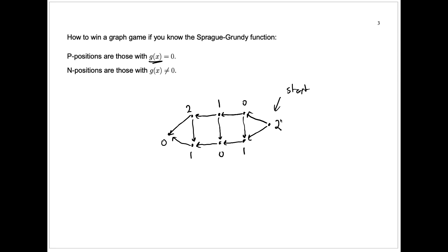Since we know all the p and the n positions, we ask how should we play? Well, the idea is to play a move that will get you to a p position. So we're going to move towards this zero. We first move that way.